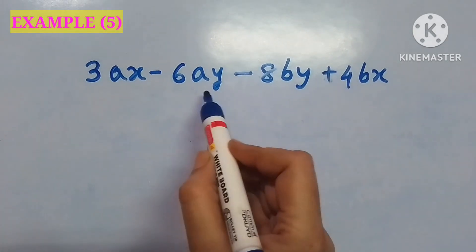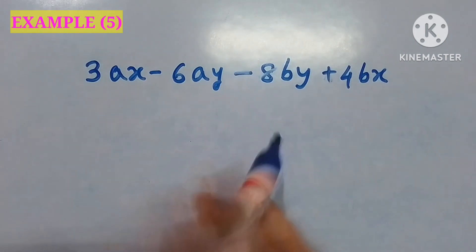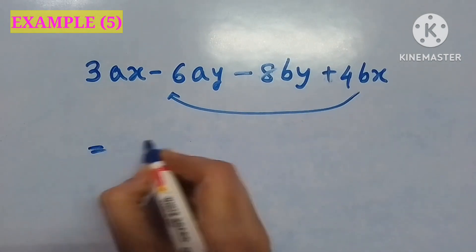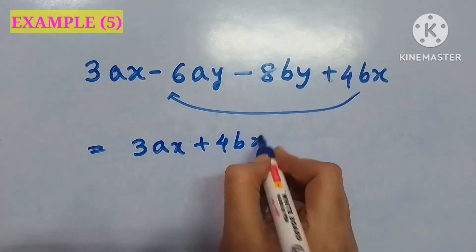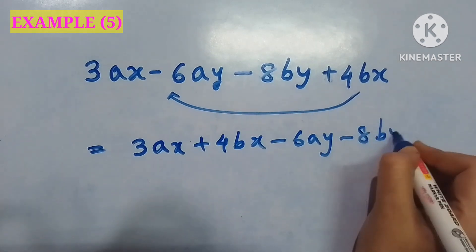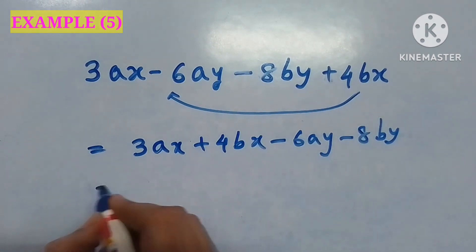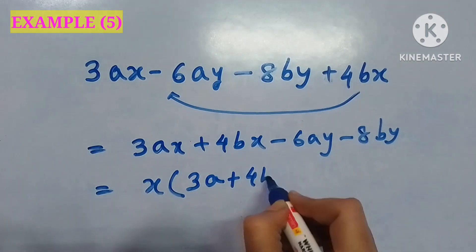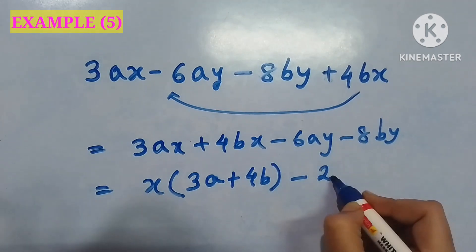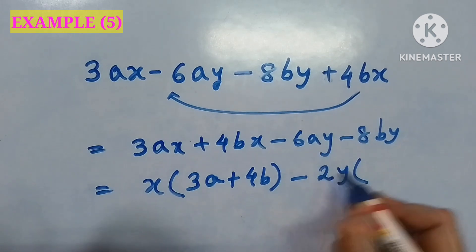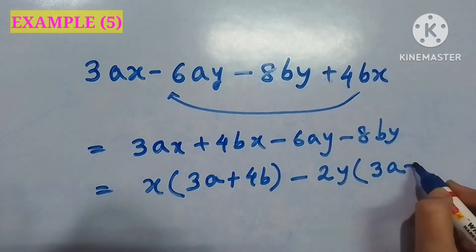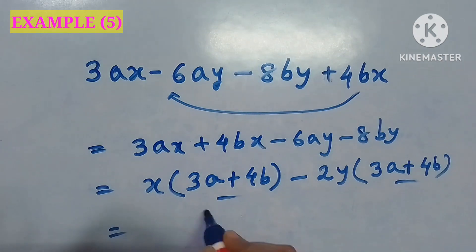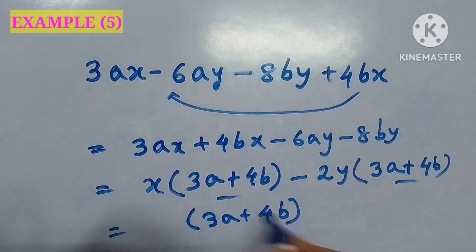In my fifth example: 3ax minus 6ay minus 8by plus 4bx. I have to shift the last term into the second position to make the groups — this decision has to be taken carefully. After shifting, I can easily take x common from the first two terms, leaving 3a plus 4b. From the last two terms I take 2y common and again 3a plus 4b is left. From both groups I take 3a plus 4b common — be careful about the sign — and I get the ultimate result of this factorization method.